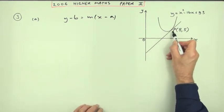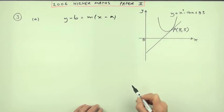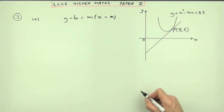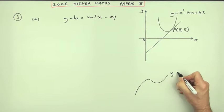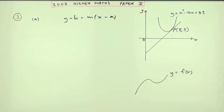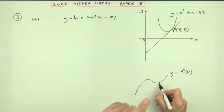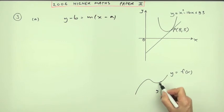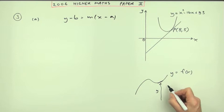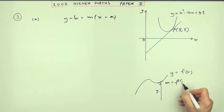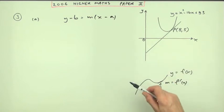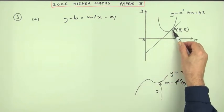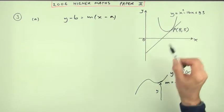...will come from the gradient of that curve at that point, which is given by the derivative. If you've got a curve y equals some function of x, at every point there are two things: a height (the y-coordinate) and a direction — a slope. That slope at that point is given by f'(x). So if that line's a tangent, the gradient of that line must equal the derivative of the curve at that point.